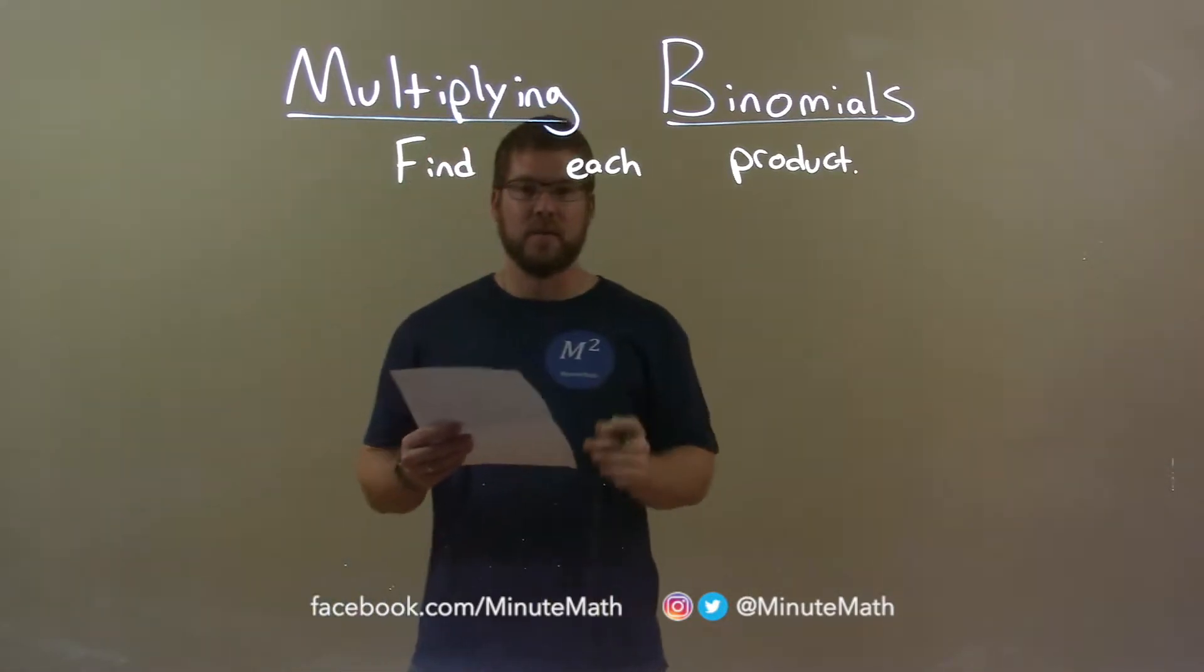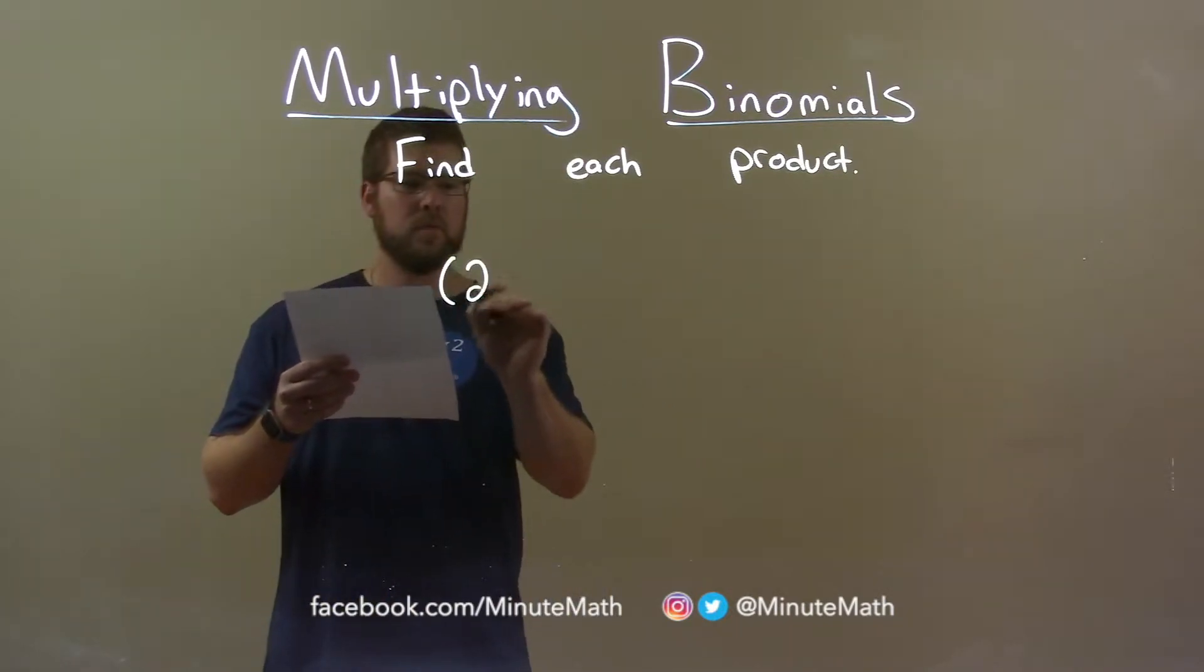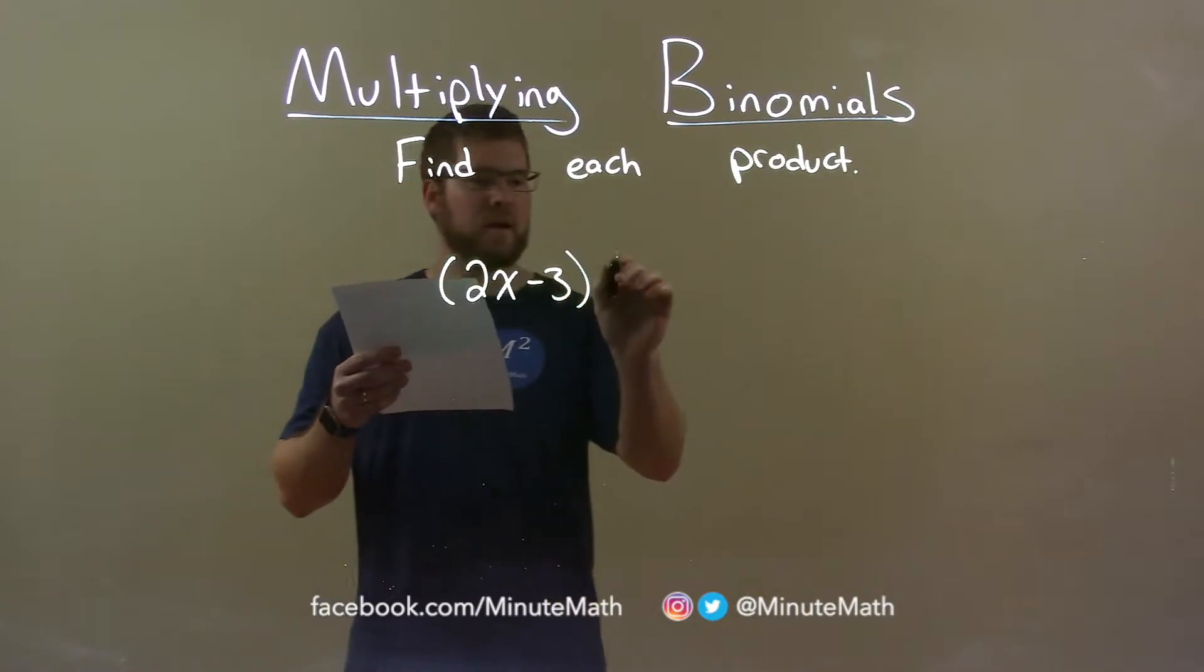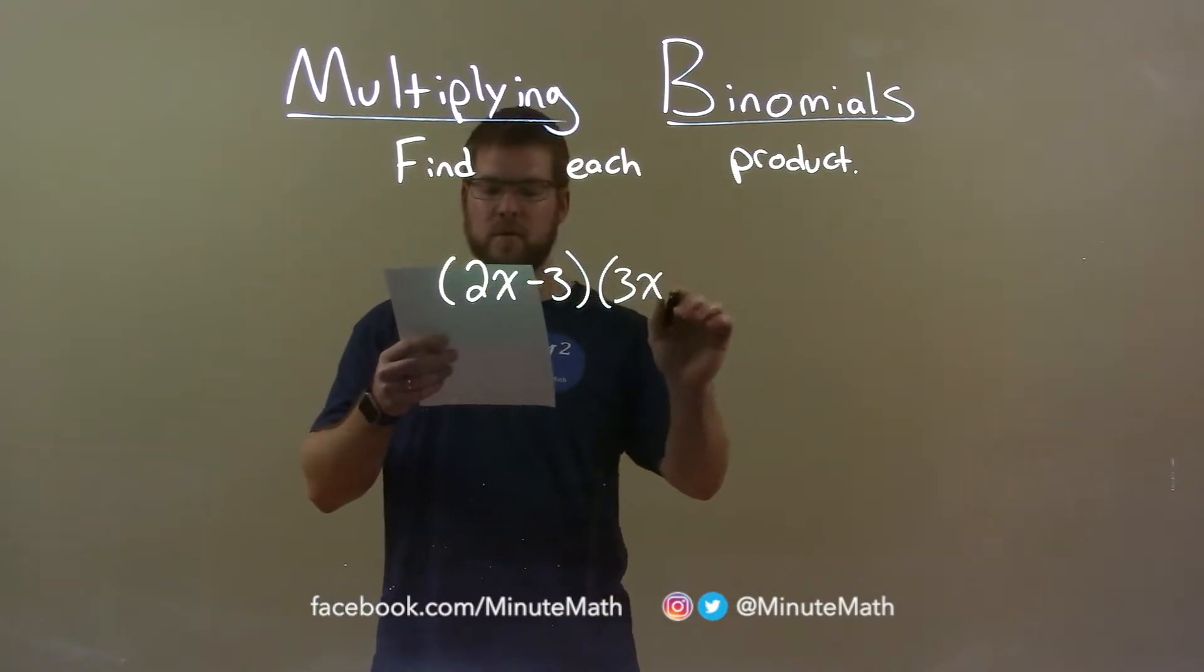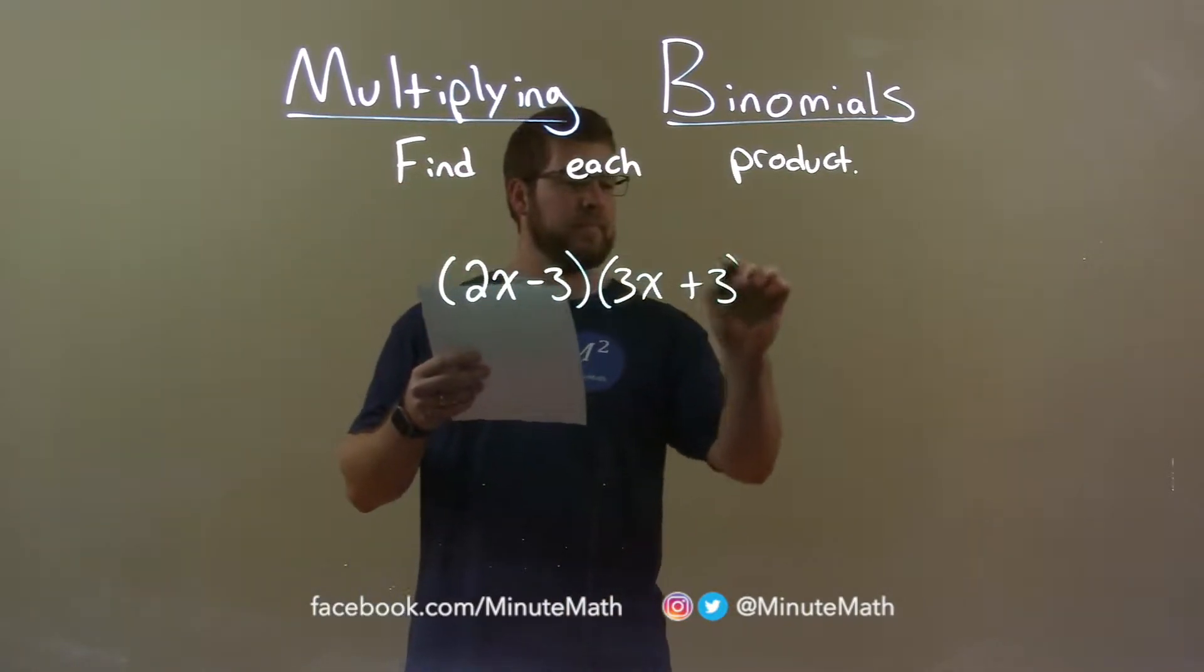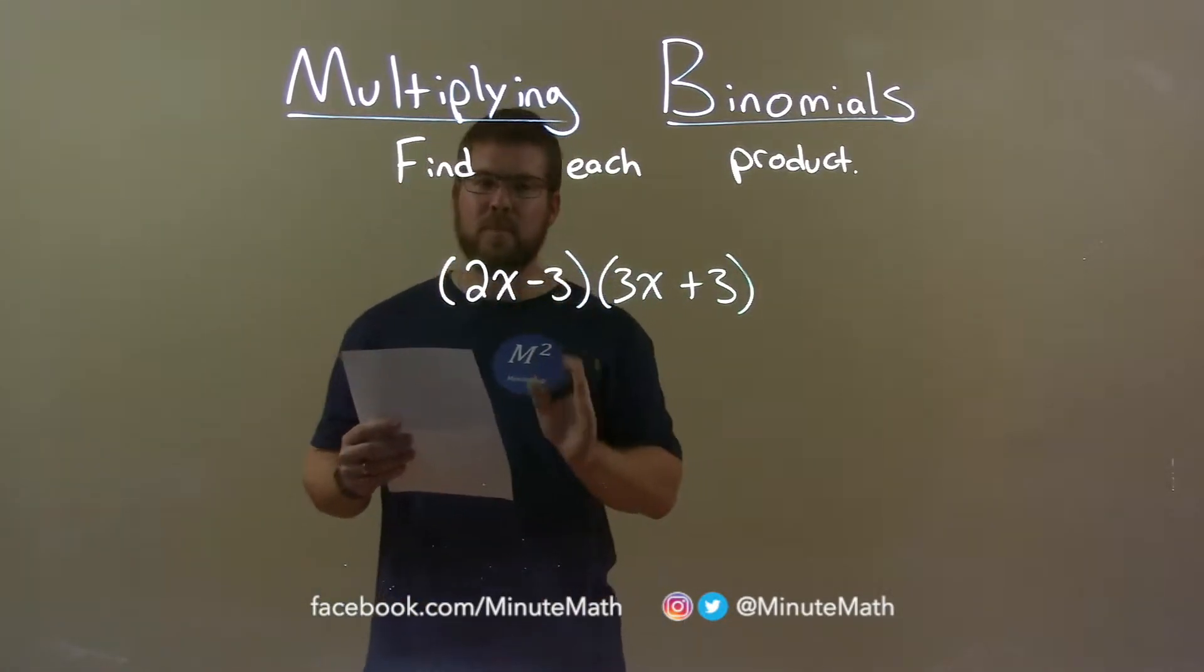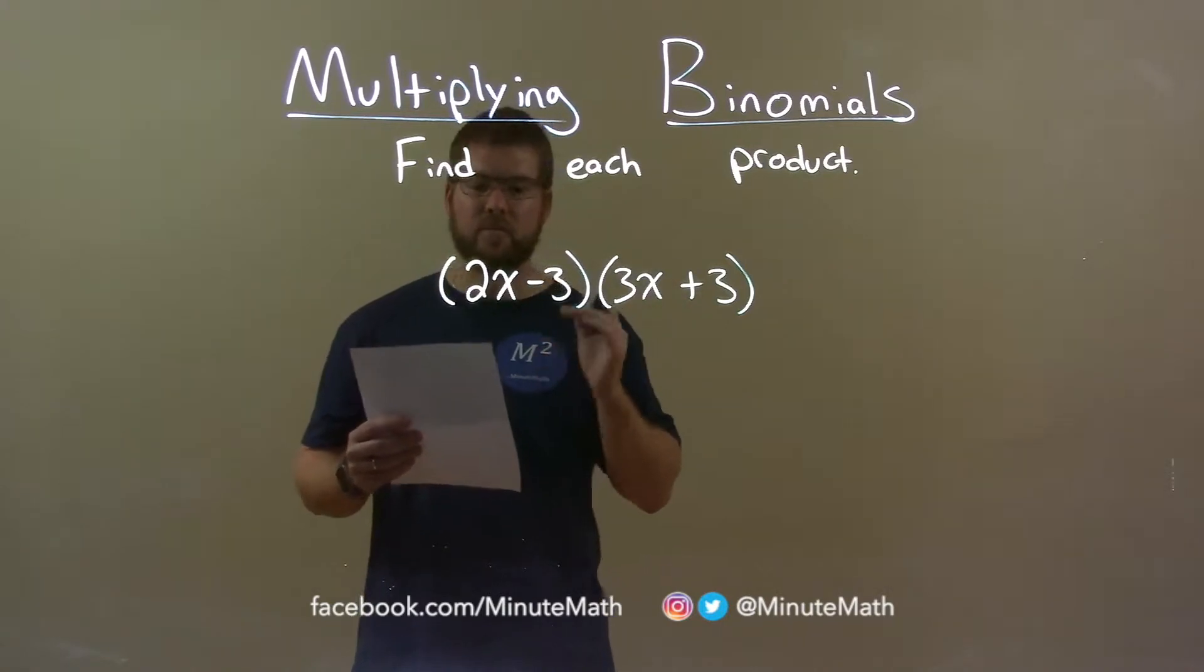If I was given this product, 2x minus 3 times 3x plus 3, we want to take all parts of our first parenthesis and multiply it by all parts of our second parenthesis.